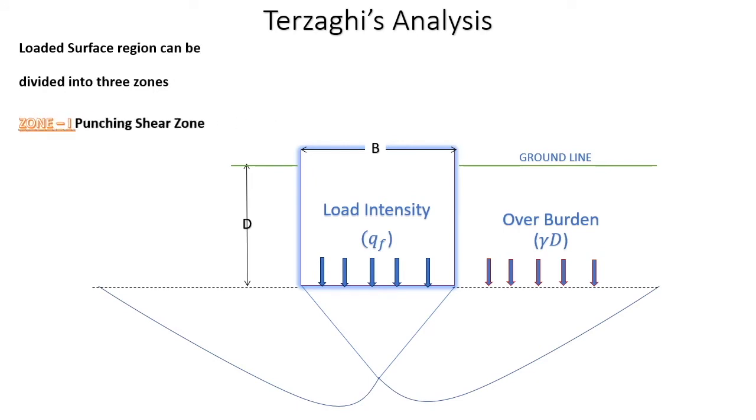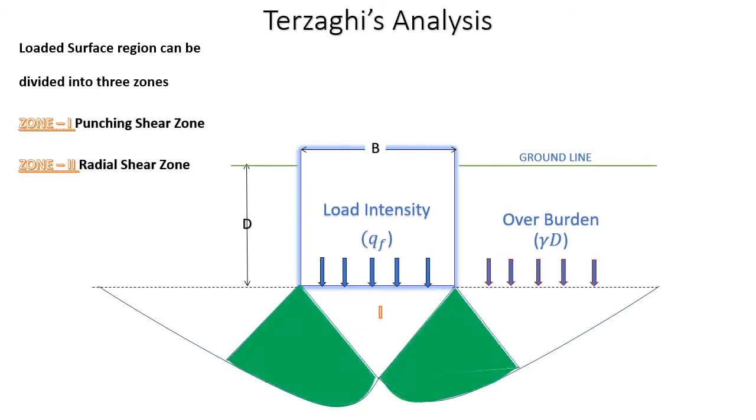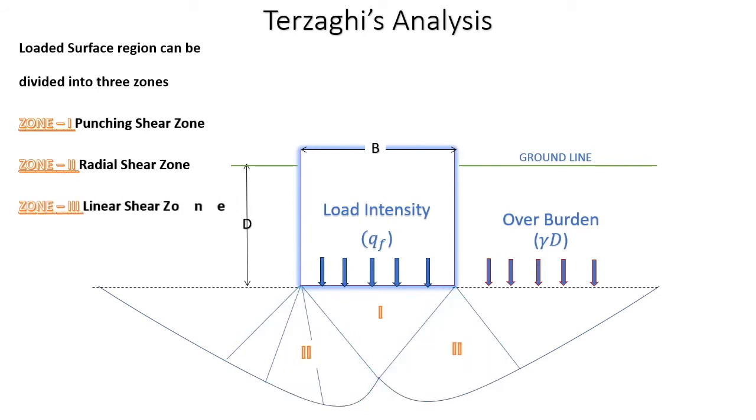The punching shear zone is located directly below the foundation. The radial shear zone is located from the edges of the foundation outwards. The linear shear zone is located outside the bounds of the radial shear zone.